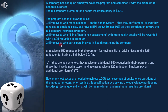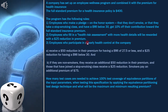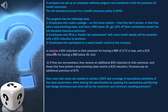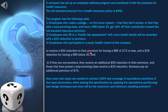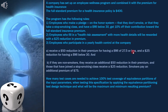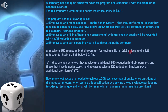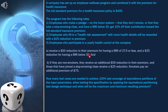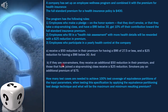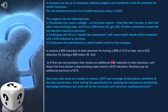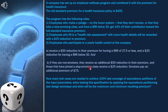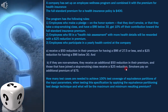Number three: employees who participate in a yearly health control at the company receive a $50 reduction in their premium for having a BMI of 27.5 or less, and a $25 reduction for having a BMI below 30. And if they are non-smokers, they receive an additional $50 reduction in their premium, and those that have joined a stop-smoking class receive a $25 reduction.